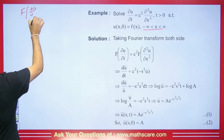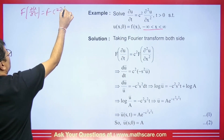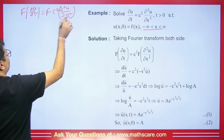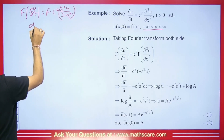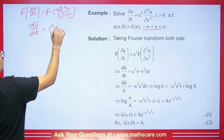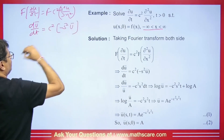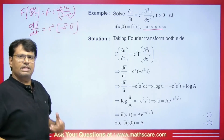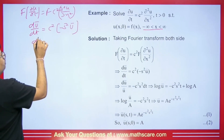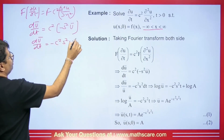Taking the Fourier transform of ∂u/∂t = c² ∂²u/∂x², the left side becomes dū/dt and the right side gives c² × (−s²ū). So we get dū/dt = −c²s²ū.